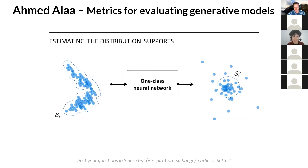It can be very hard to estimate the support of a distribution, let alone the beta support or alpha support. To do this, we use a one-class neural network that takes the real data and converts it into a new feature space in the form of a hypersphere — finding a learning manifold where most samples concentrate around the center. The beta support and alpha support are then just the radius of the hypersphere containing alpha percentage or beta percentage of the data. We train this one-class neural network on the data to estimate the supports, and then estimate the alpha precision and beta recall as defined.